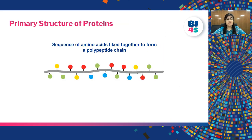The primary structure of proteins is a sequence of amino acids linked together to form a polypeptide chain. This is just like a simple straight chain.